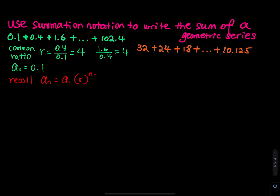Recall that a_n is equal to a_1 times r raised to n minus 1. Notice that if the starting term is a_2 instead of a_1, then the exponent would be n minus 2. Let's plug in what we know. The nth term is 102.4, the first term a_1 is 0.1, and the common ratio is 4. But n we don't know, so we keep that as n minus 1.